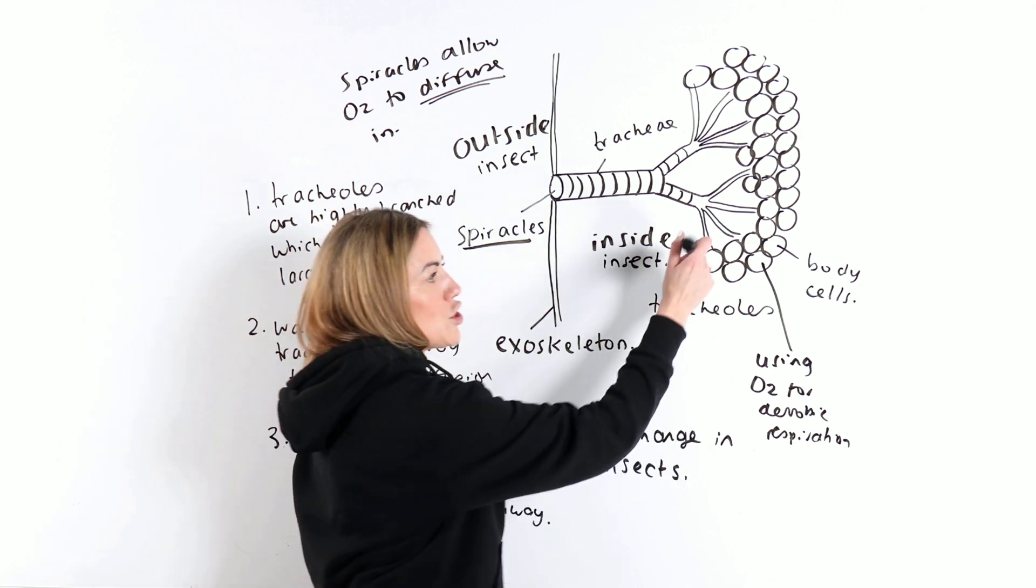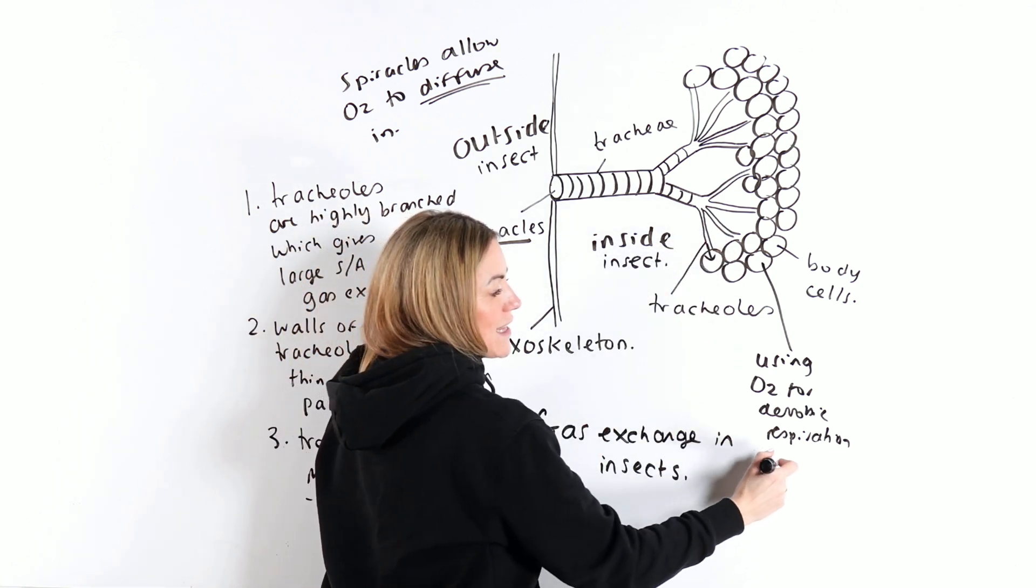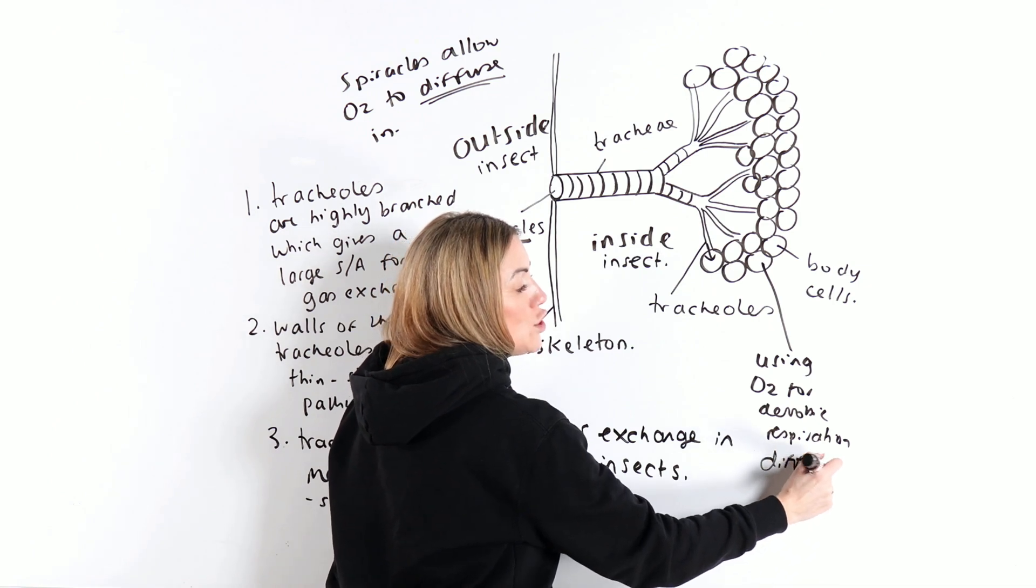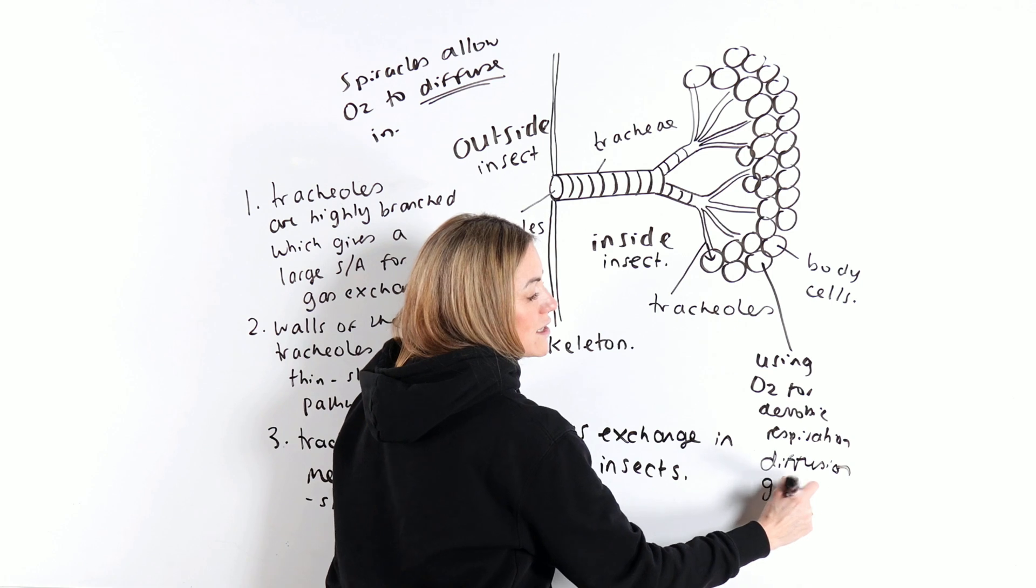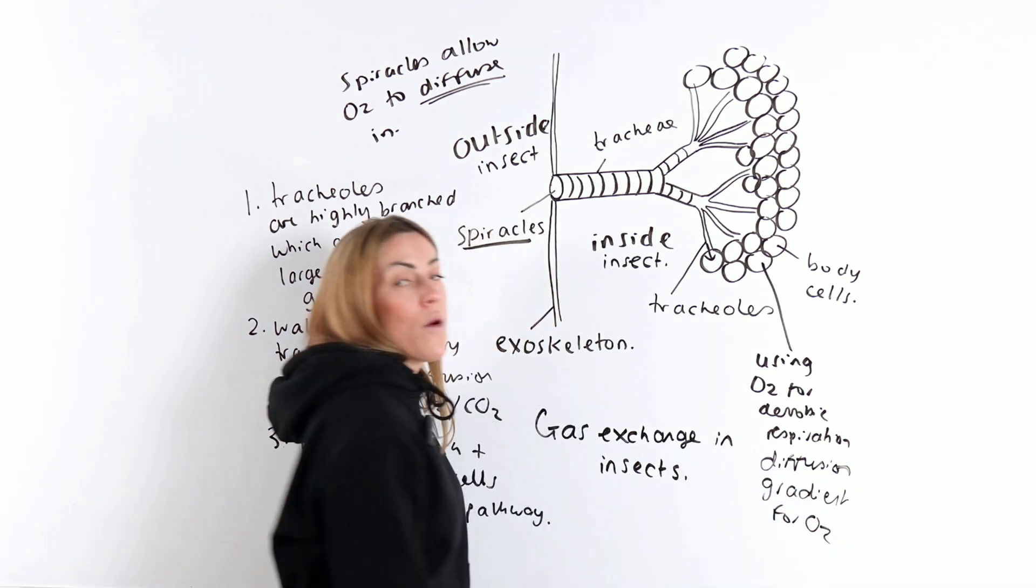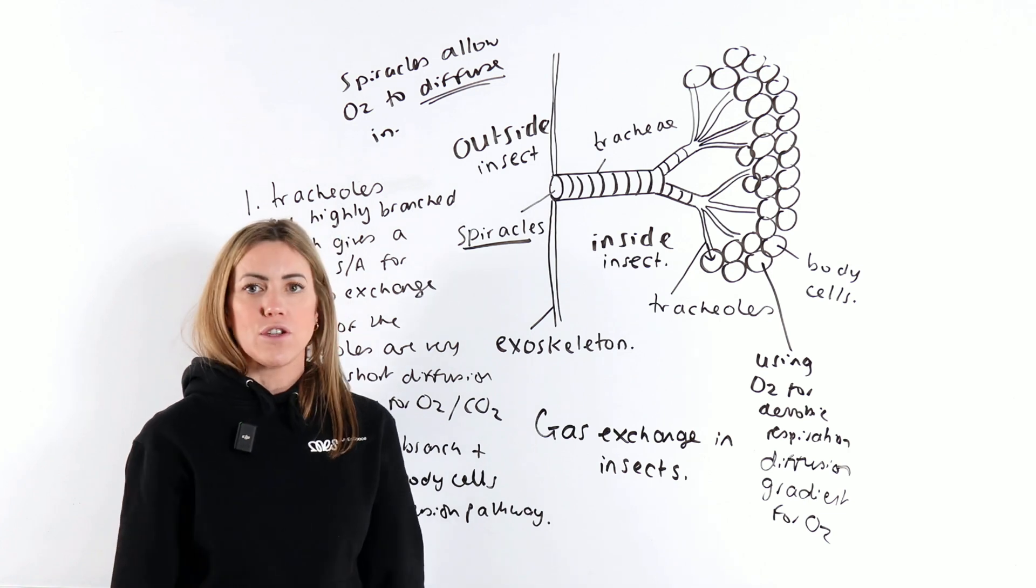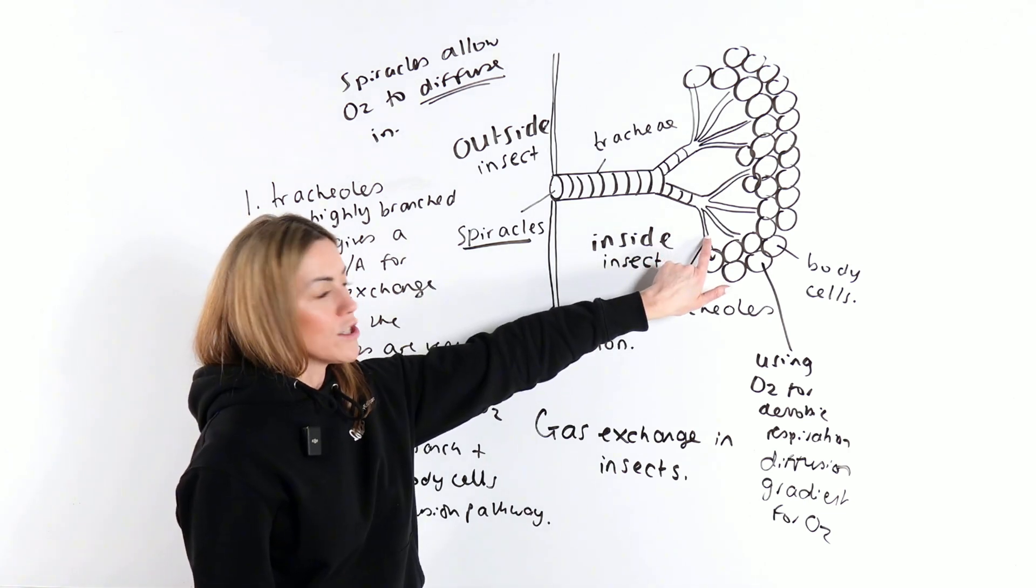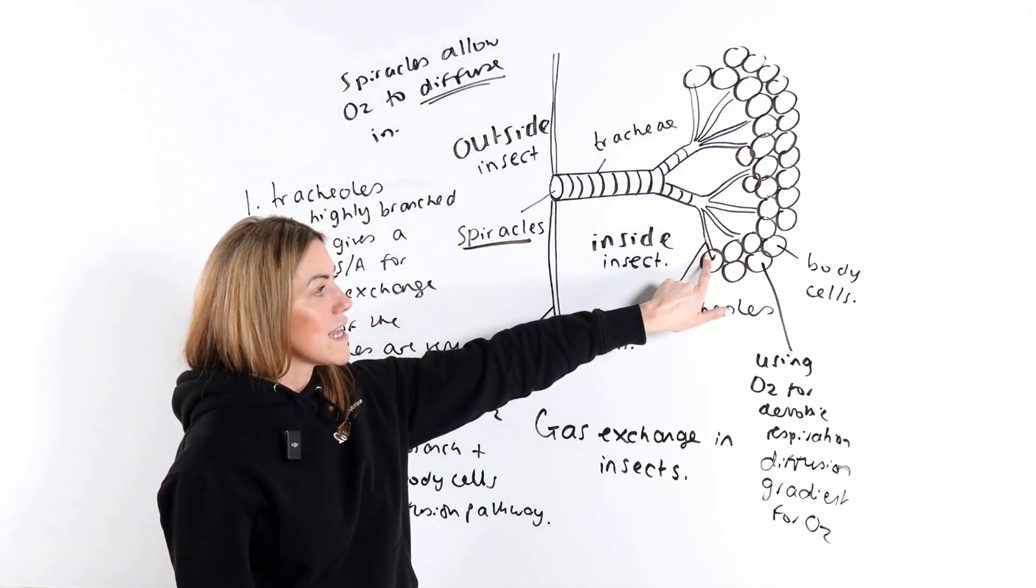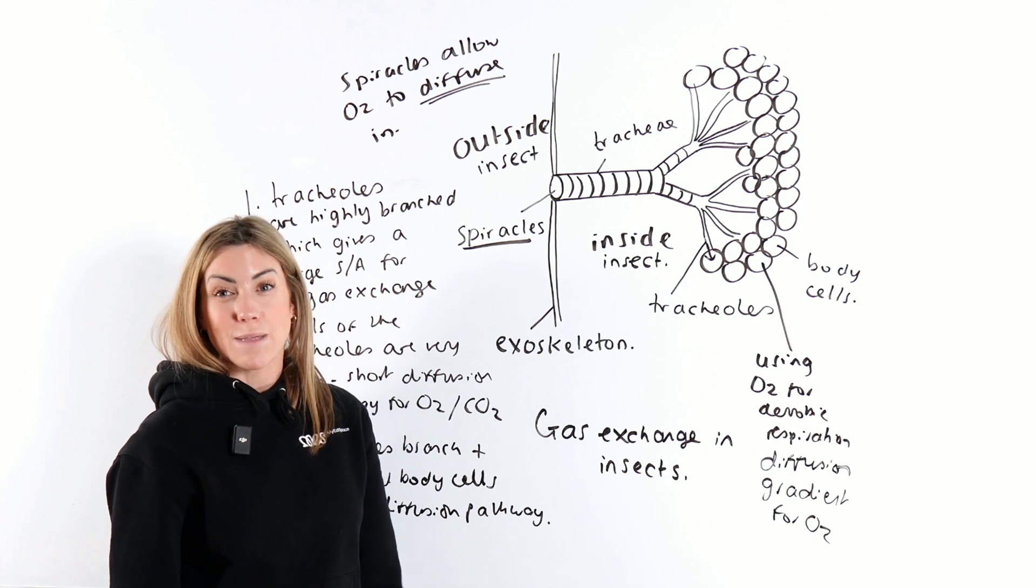Between the tracheoles and the body cells of the insect, there is a diffusion gradient for oxygen. So oxygen is simply diffusing down the concentration gradient because there'll be a higher concentration in the ends of the tracheoles than the body cells because they are using oxygen for aerobic respiration.